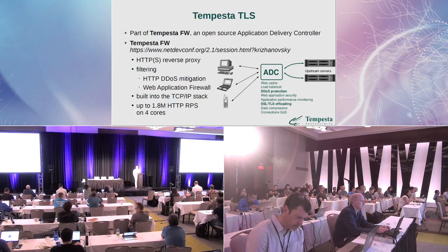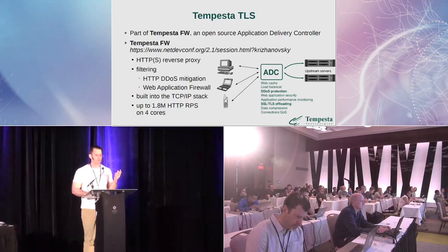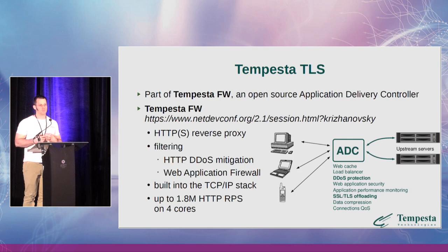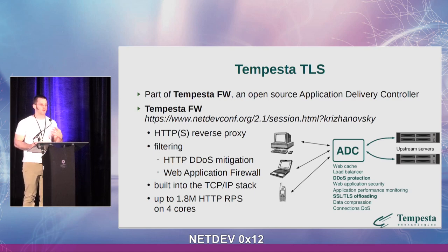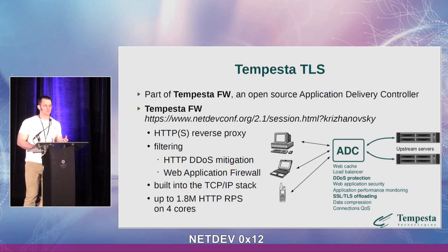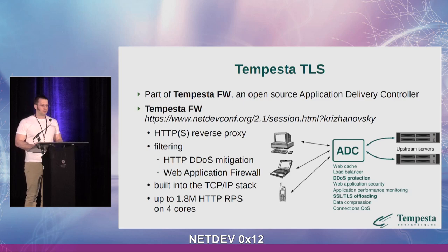First, I want to describe the context of the talk. Today I will discuss Tempest TLS, which is part of Tempest FW. Tempest FW is a Linux application delivery controller — a hybrid application combining web caching, load balancing, security, DDoS mitigation, web security protection, and TLS/SSL offloading. In two words, Tempest FW is a hybrid of HTTP accelerator and firewall.